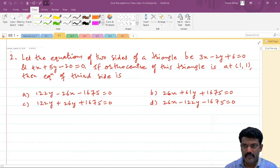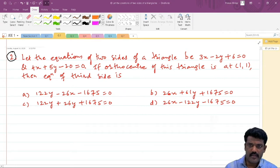This is question number 2. It is given the equations of two sides of a triangle are 3x-2y+6=0 and 4x+5y-20=0. The orthocenter of this triangle has coordinates (1,1), so we have to find the equation of the third side.